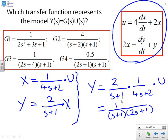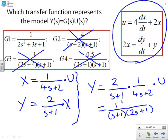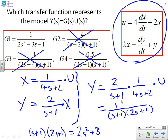Checking the options: it can't be G2 because that has S plus 2 and S plus 1, whereas we have S plus 1 and 2S plus 1. G3 has the wrong gain. G4 also has the wrong gain. So we check G1, which has the polynomial multiplied out. Computing S plus 1 times 2S plus 1 gives 2S squared plus 3S plus 1, and that is indeed what G1 has in its denominator. So G1 is the correct answer.